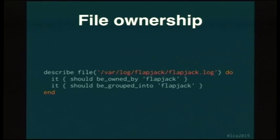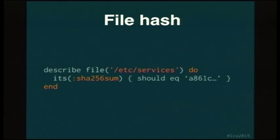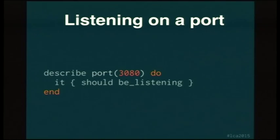File ownership: who the files are owned by and which group the file has. You can also test for hashes of files — this is doing a SHA-256 sum of /etc/services, verifying that the file hasn't been corrupted or that it's the right version of the file, maybe updated as part of your package installation. Finally, you can test that a port is open. When Flapjack starts, it listens on port 3080 by default — this uses Netstat under the hood to check that the port is in fact now open.